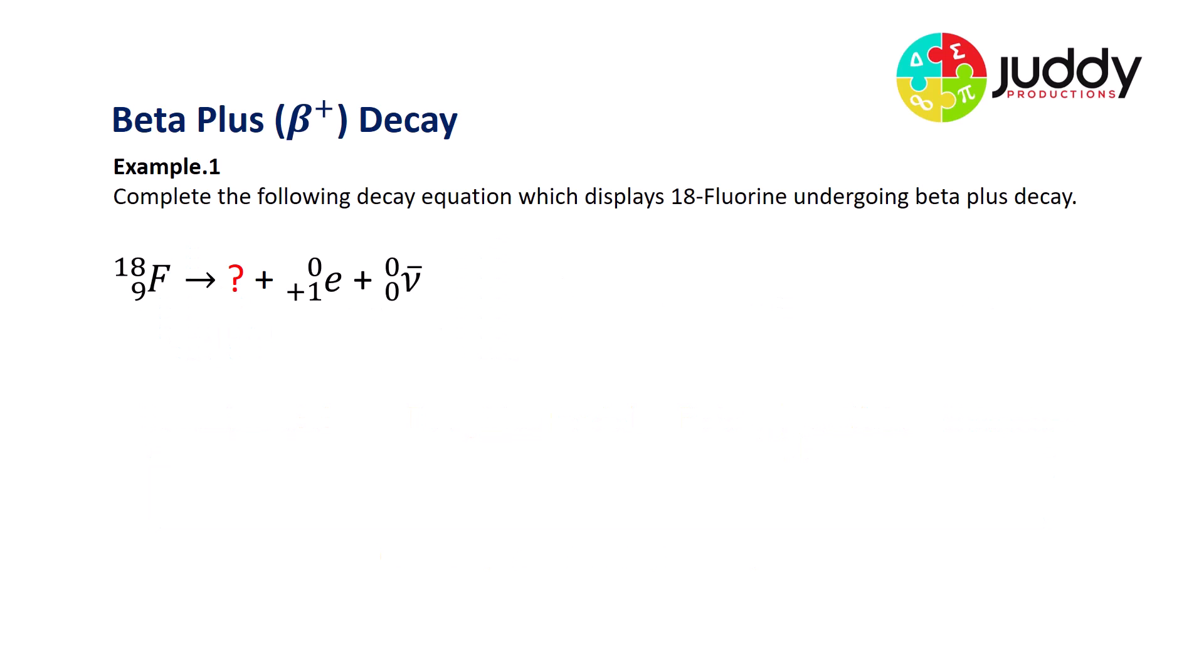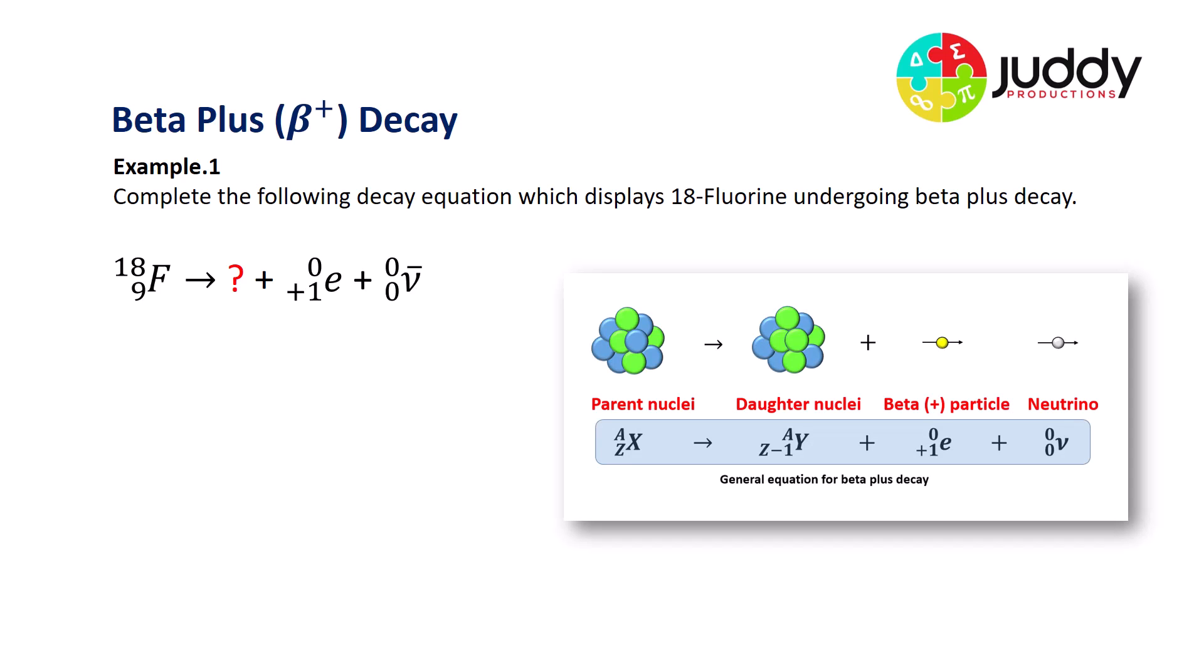Example number one, complete the following decay equation, which displays 18 fluorine undergoing beta plus decay. So here's our equation and we're trying to solve for the red unknown question mark. Here's our general equation for beta plus decay. So first of all, we know that in beta plus decay, the mass number does not change from the parent nuclei to the daughter nuclei. So it stays at 18. We also know that the atomic number does get reduced by one. So we started with number nine for fluorine and that has been reduced by one for our unknown daughter nuclei.